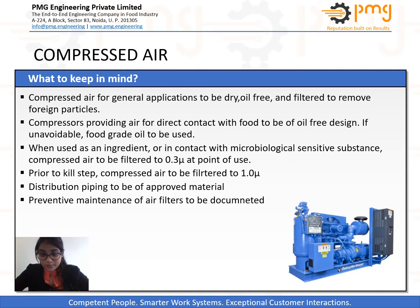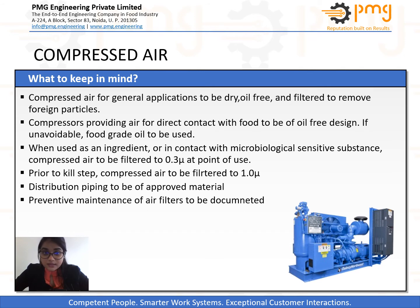Let us now discuss about compressed air. Compressed air is considered to be one of the most important utilities in food industries. Compressed air efficiently supports food industries as long as care is taken to remove contaminants from the systems. Compressed air systems can be divided into two types: contact systems and non-contact systems. The selection of system depends on whether the compressed air is required to be in contact with the food product or not. Let us now discuss the various parameters that are required to be considered.